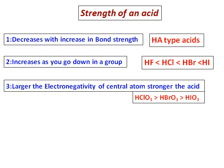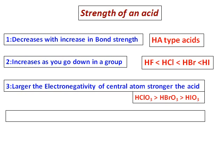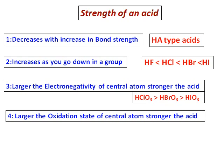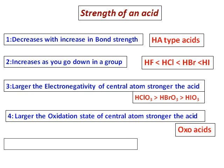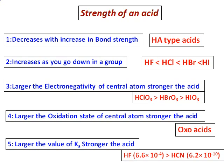For example, comparing the oxoacids HClO₃, HBrO₃, and HIO₃: Cl is more electronegative than Br than I, hence HClO₃ is stronger than HBrO₃ and HIO₃. Fourth, larger the oxidation state of the central atom, stronger the acid — mainly applicable to oxoacids. Fifth, larger the value of Ka, stronger the acid. For example, HF has a Ka of 6.6 × 10⁻⁴, while HCN has a Ka of 6.2 × 10⁻¹⁰, so HF is stronger than HCN.